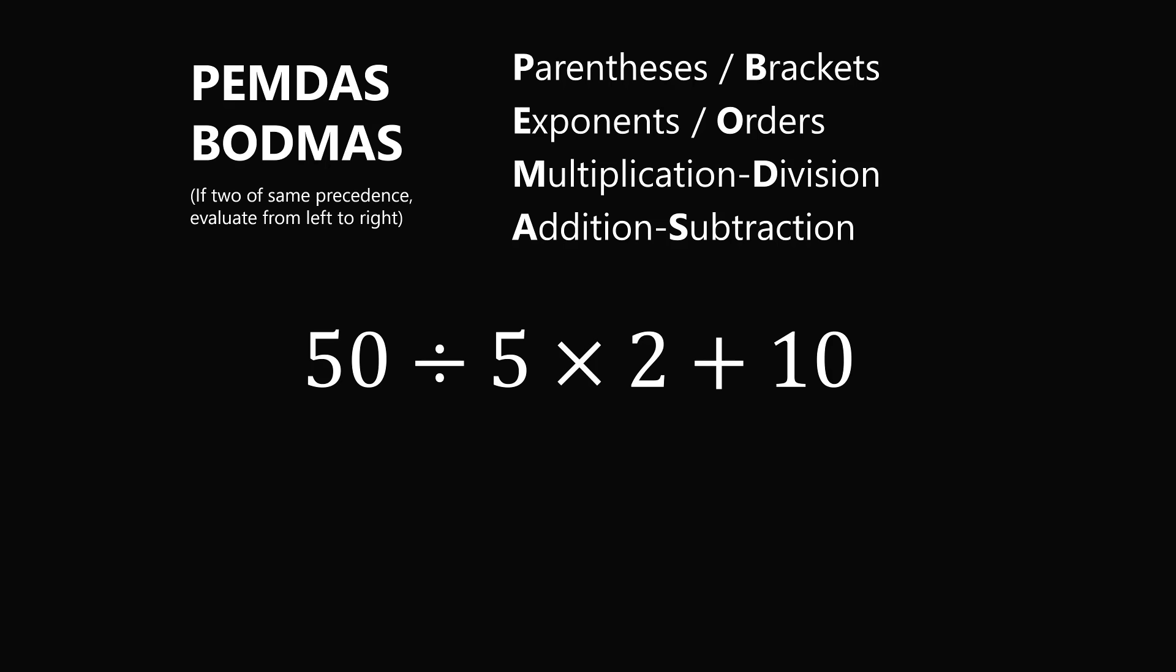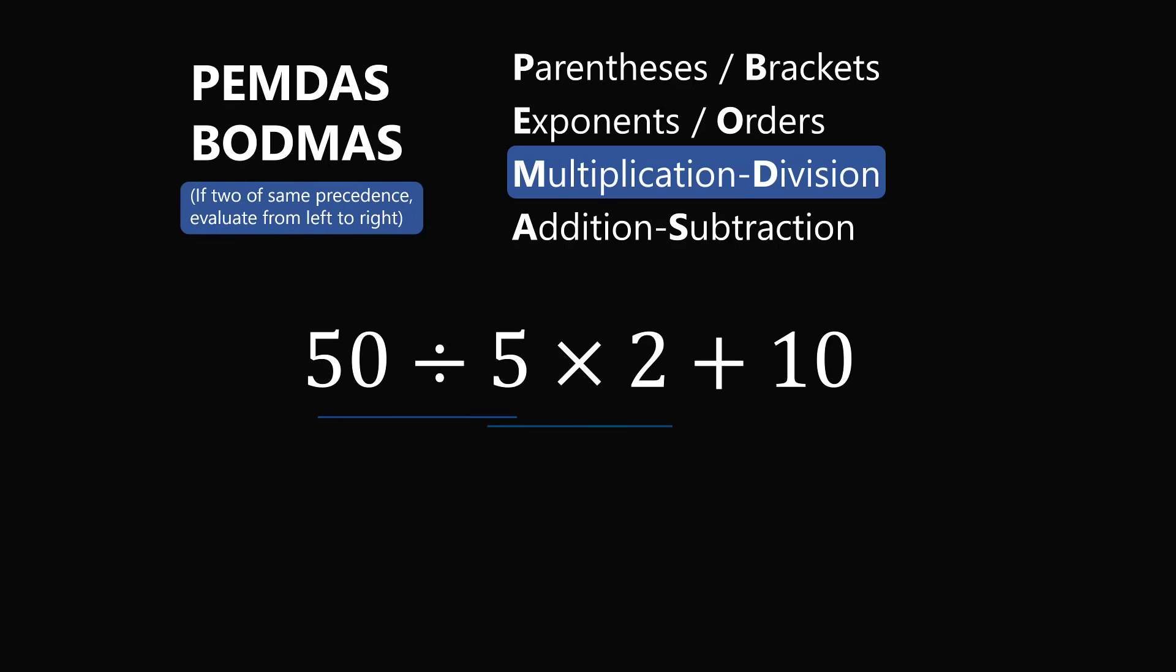We also have an important rule. If you have two operators of the same precedence, evaluate from left to right. In this expression, we do have a division and a multiplication. So do we perform the multiplication first, or do we perform the division first? The rule is that if you have two operators of the same precedence, then evaluate them from left to right.